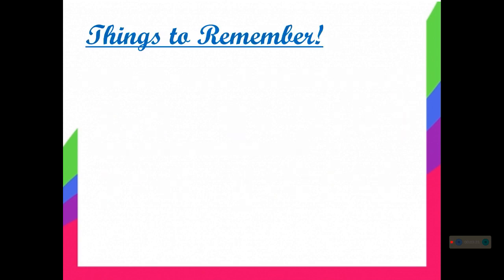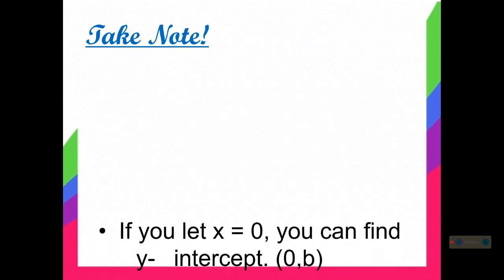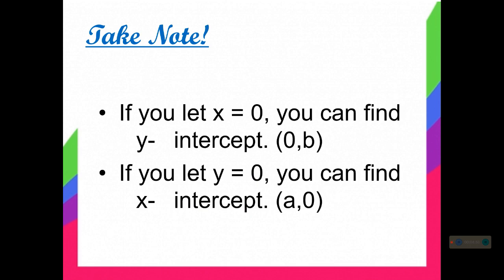From our previous examples, those are the x and y intercepts. One method of graphing a linear equation is using the x and y intercepts. In geometry, you learn that 2 points determine a line. Since the graph of a linear equation is a line, 2 points are enough to draw a graph. If you let x equal to 0, you can find the y intercept — that is in the form (0, B). And if you let y equal to 0, you can find the x intercept — that is in the form (A, 0).